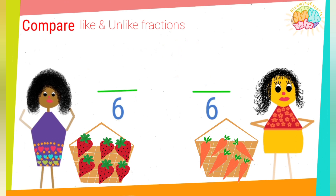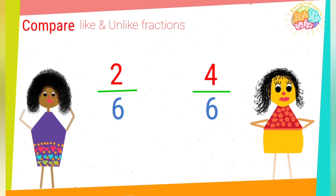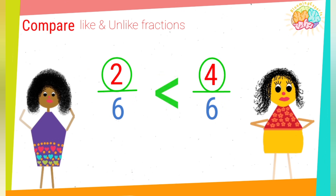The first friend ate two strawberries out of six — two parts out of six. The second friend ate four pieces out of six. Now let's compare. Both have the same number of pieces in their basket, but they ate a different number of pieces. So we compare the numerators, where four is greater than two.